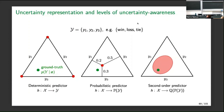However, as long as we remain on the first level and force our predictor to give a precise probability distribution, we do not allow the learner to express its uncertainty about the prediction. By giving just a single point — say 0.2, 0.5, 0.3 — the learner has to pretend full certainty. If we want the learner to express epistemic uncertainty, referring to the state of knowledge of the learner, we have to be more expressive.